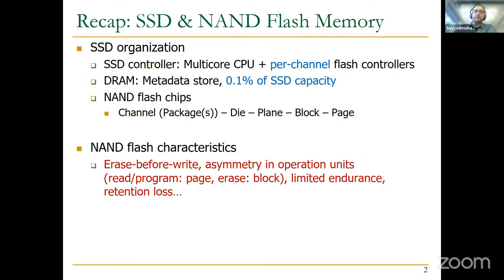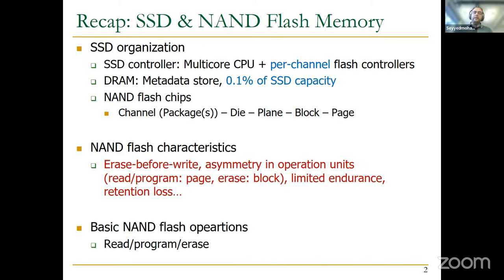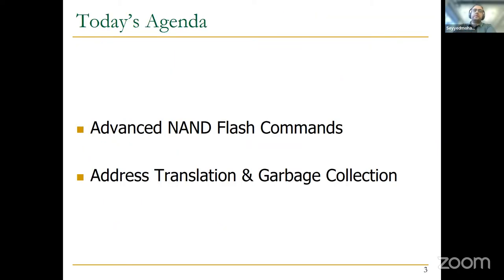We also saw NAND flash characteristics: we need erase-before-write, asymmetry in operation units — read and program happen in pages, and erases have block granularity — limited endurance, and retention loss, meaning we need to do refreshing at some point. We also discussed basic NAND flash operations: read, program, and erase, and the sensing circuitry. Today we will discuss advanced NAND flash concepts and address translation and garbage collection.